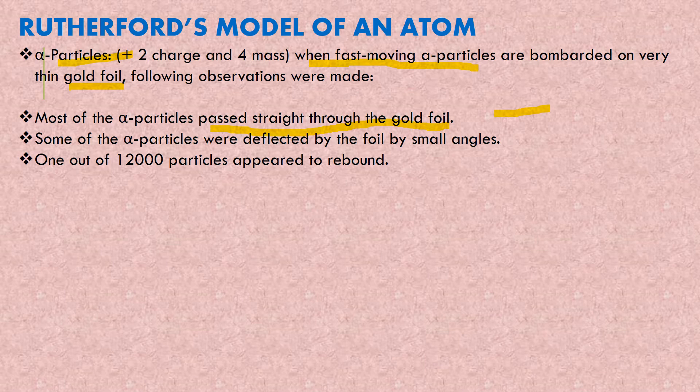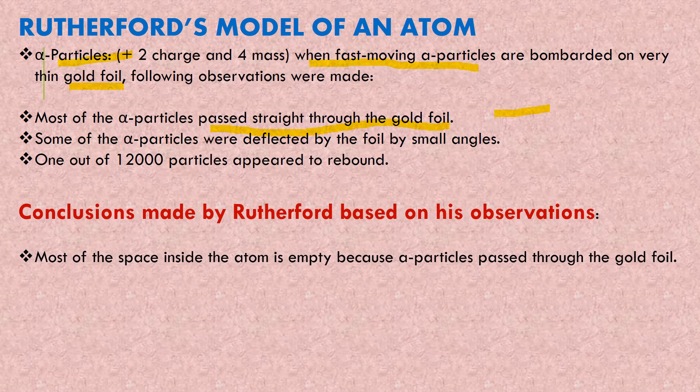Third, one out of 12,000 particles - only rare ones, only one or two - rebounded. That means in the same direction they came back. So three things happened: when alpha particles collided with the gold foil, some alpha particles went straight away, second, some changed a little bit direction, and rarely one or two rebounded.